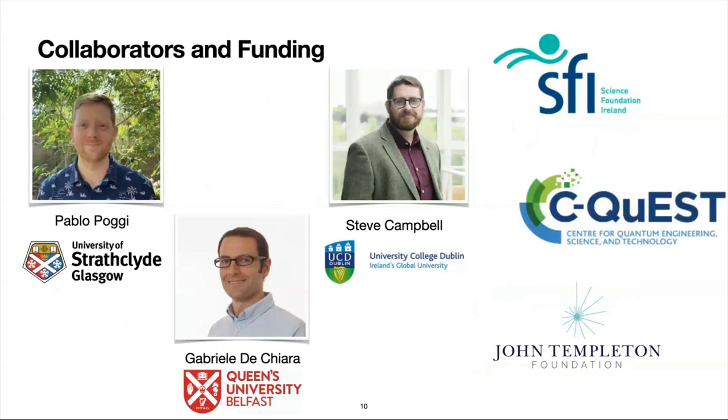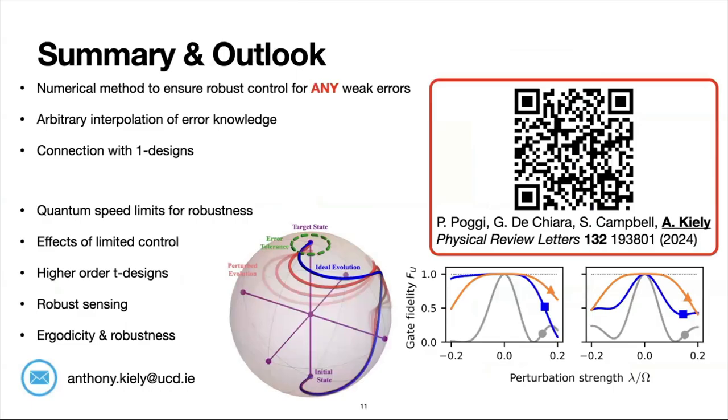So just to sum up then, to thank everyone who's worked on this. So Pavel Poggi, who's in Strasbourg, University of Glasgow. Gabriele De Chiara, Queen's in Belfast. And Steve Campbell, who you heard from this time of the week, also in UCD with me. All the different funding agencies. And so just to summarize, what was the method all about? So this is some new cost function, essentially, to ensure that you're robust to any weak static error. And this allows you to kind of interpolate between some partial knowledge, knowing what this error is. And there's a nice connection with one-designs.